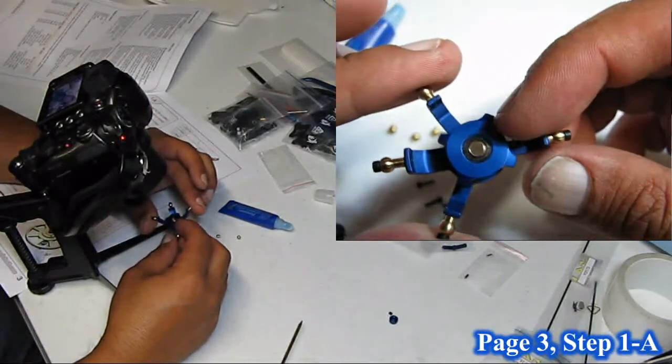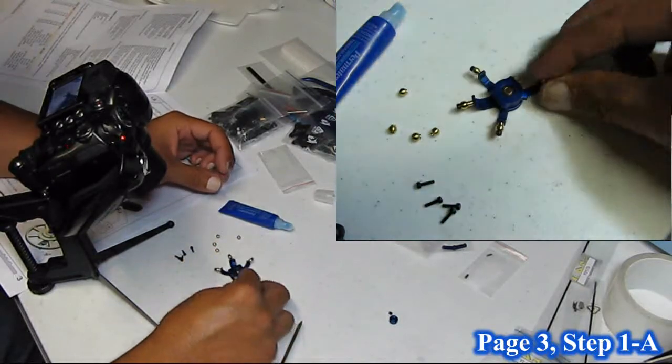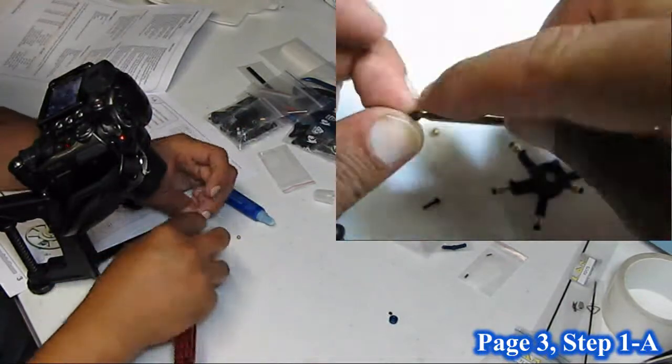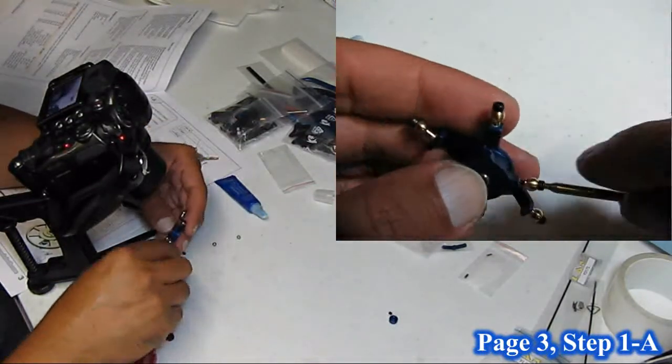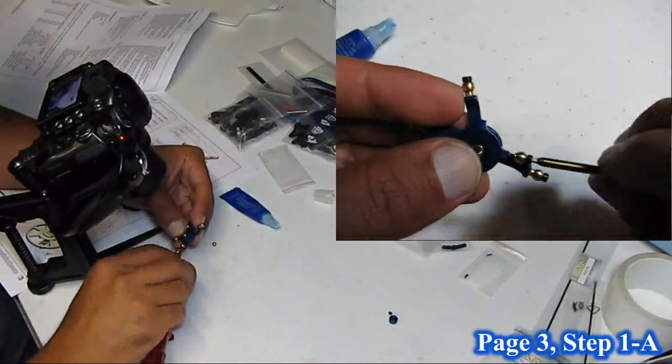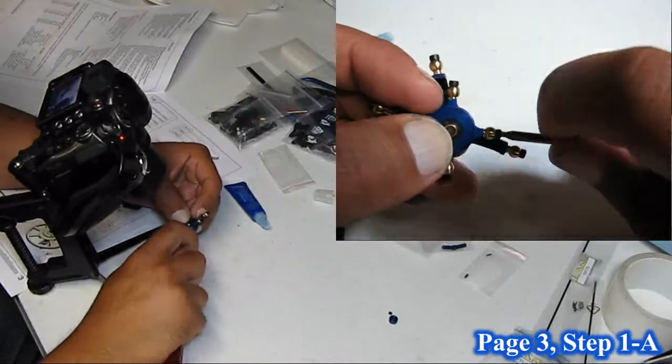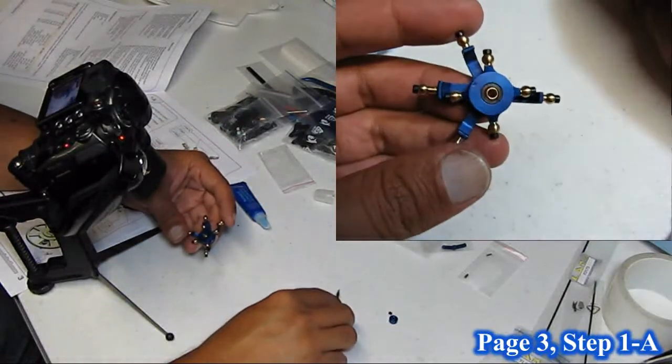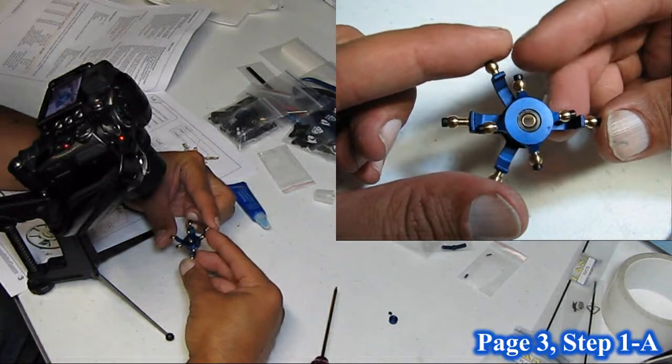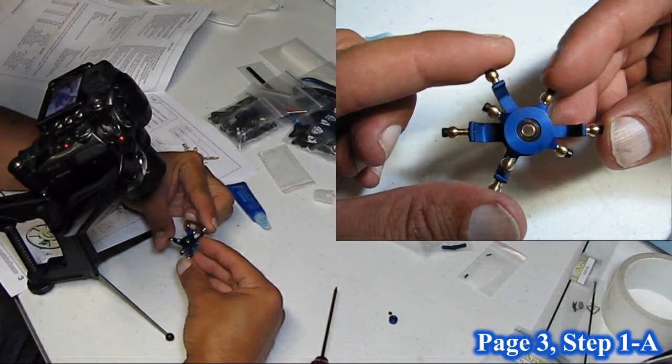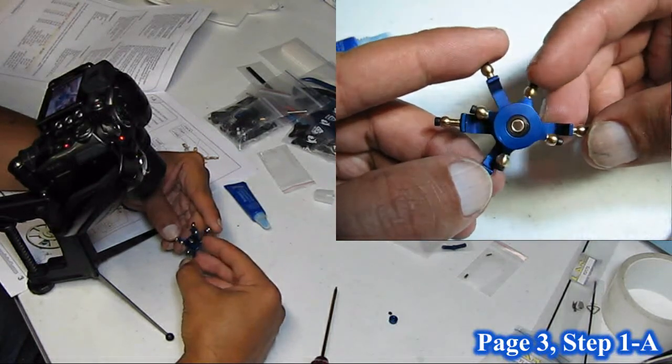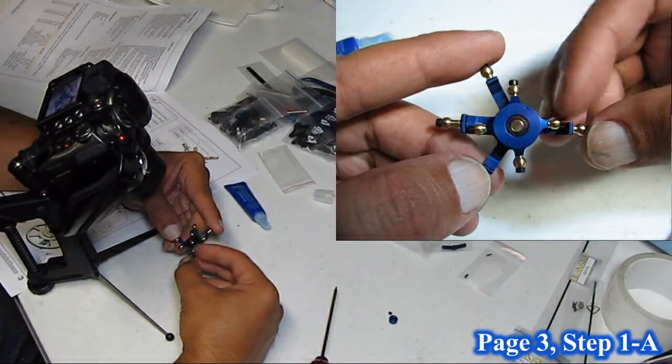So, now we're ready to start work on the inner swash. And now we have the completed swash. Make sure that it turns freely, that none of the screws, screw heads catch on any of the arms of the swash. Pretty much ready to go.